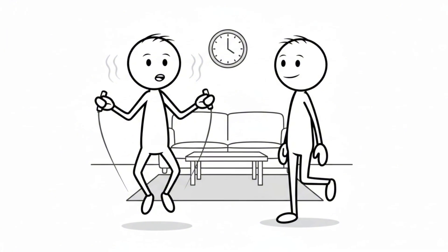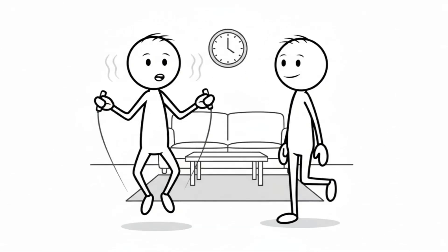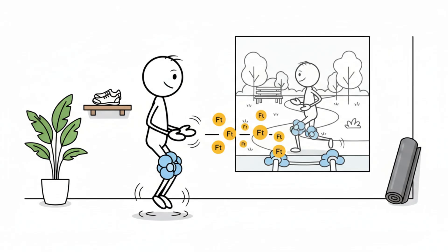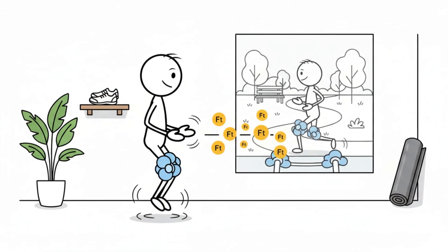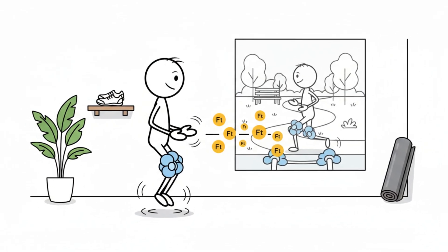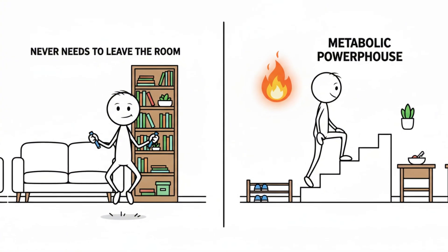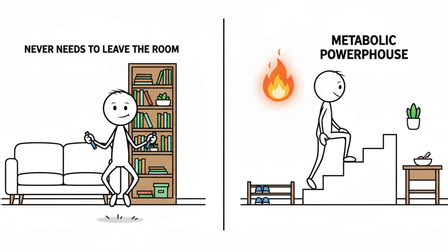If your joints feel sensitive, switch to alternating foot hops instead of two-foot jumps. This reduces impact while maintaining the aerobic stimulus. Many people underestimate how effective this low-space routine can be, but physiologically it behaves similarly to moderate outdoor jogging without ever stepping outside.